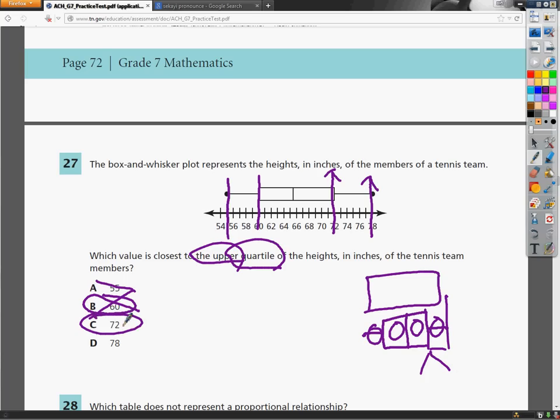So my answer is 72 because that would be the spot between the third and fourth quarter that I'm looking for, so on number 27, pick C.